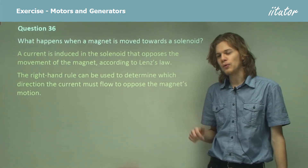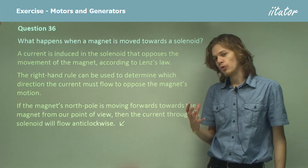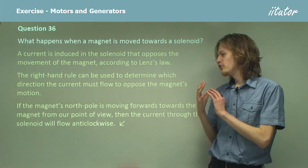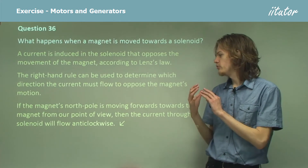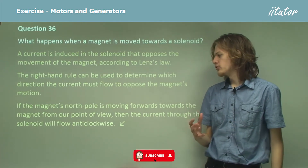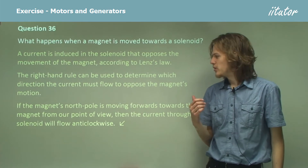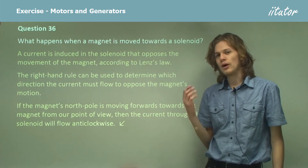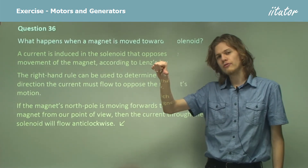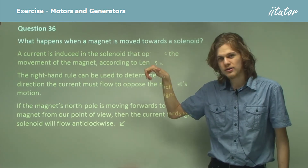In fact, we can give an example. If the magnet's north pole is moving towards the solenoid from our point of view, the current through the solenoid will flow anti-clockwise. We can see that from the right-hand rule — it has to oppose the motion of the magnet, and so the current will be anti-clockwise.